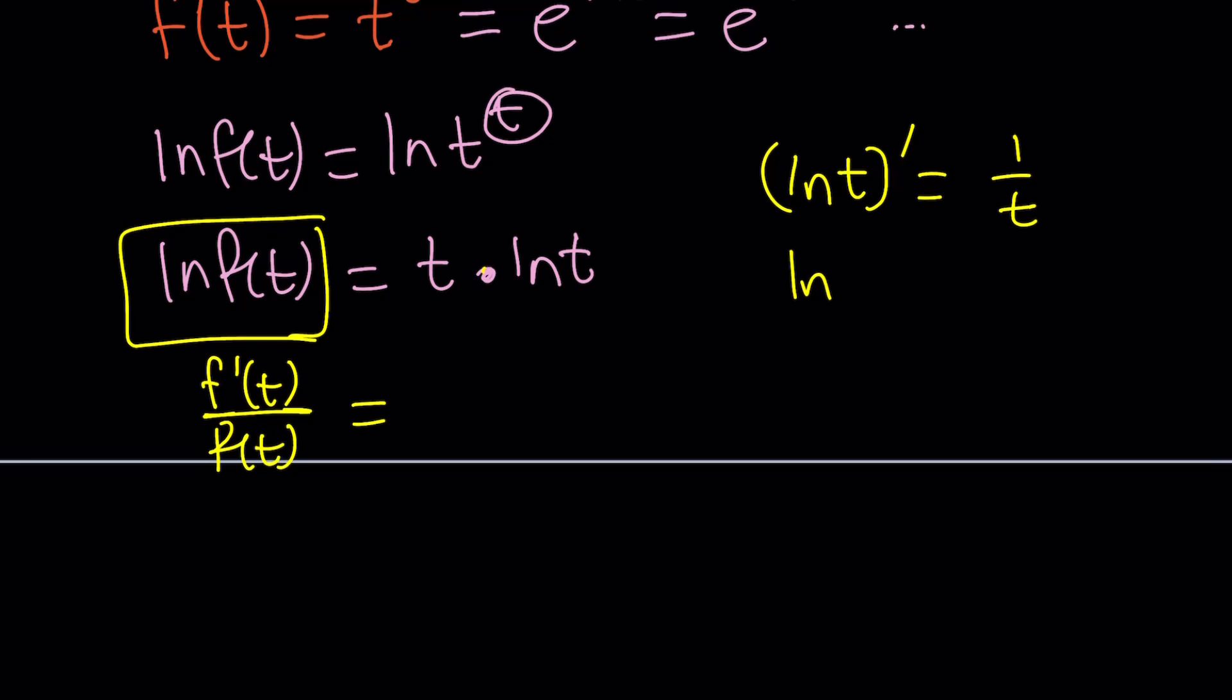But when you differentiate the left-hand side, this is kind of like implicit differentiation and we've got to use the chain rule. So ln of a function of t, not ln t. If you differentiate ln f of t, you get the derivative of f by chain rule divided by f of t. If you differentiate the right-hand side, its product rule, the derivative of t times ln t plus the derivative of ln t, 1 over t, multiplied by t. They cancel out.